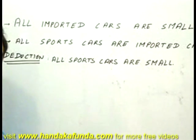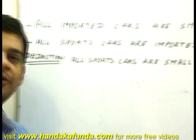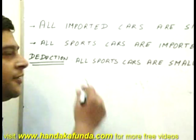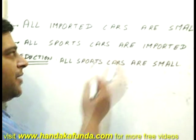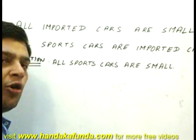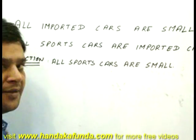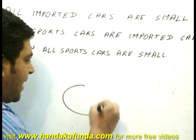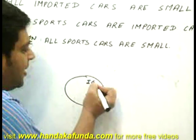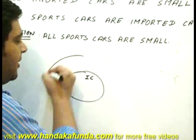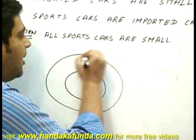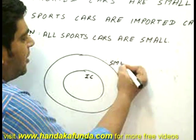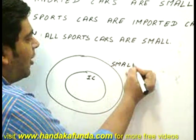Let us try and solve this problem using Venn diagrams. First of all, my major premise is that all imported cars are small. So I draw a Venn diagram in which the imported car set is inside another set which represents small.